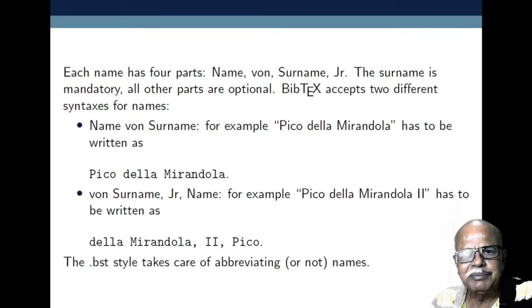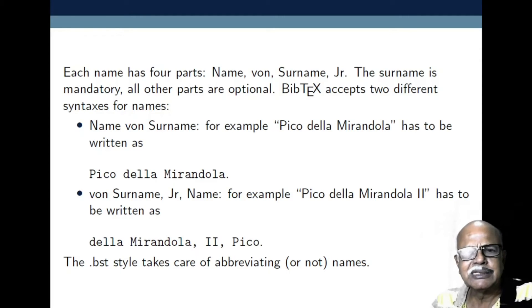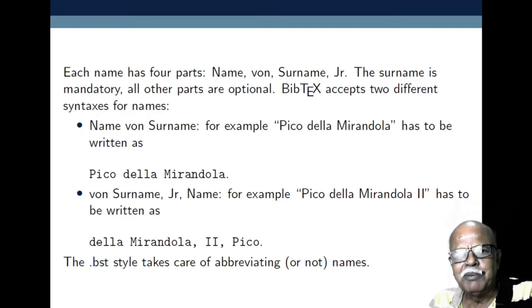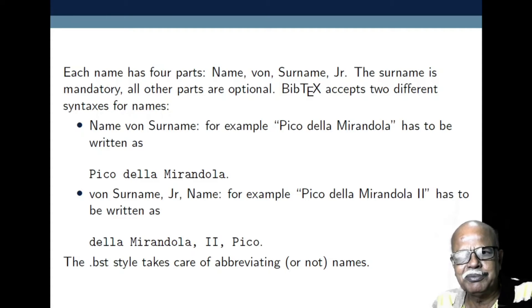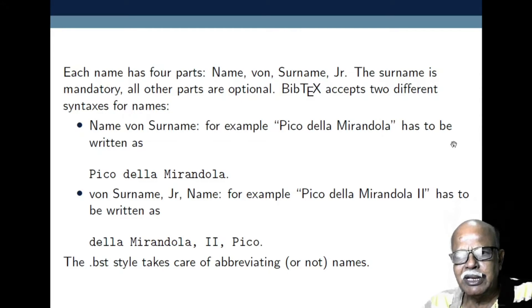Each name, according to BibTeX, has got four parts: first name, von, surname, and junior. The surname is mandatory; all other parts are optional. BibTeX accepts two different syntaxes for names. The first one is: first name, von, then surname. For example, 'Pico della Mirandola' has to be written accordingly.